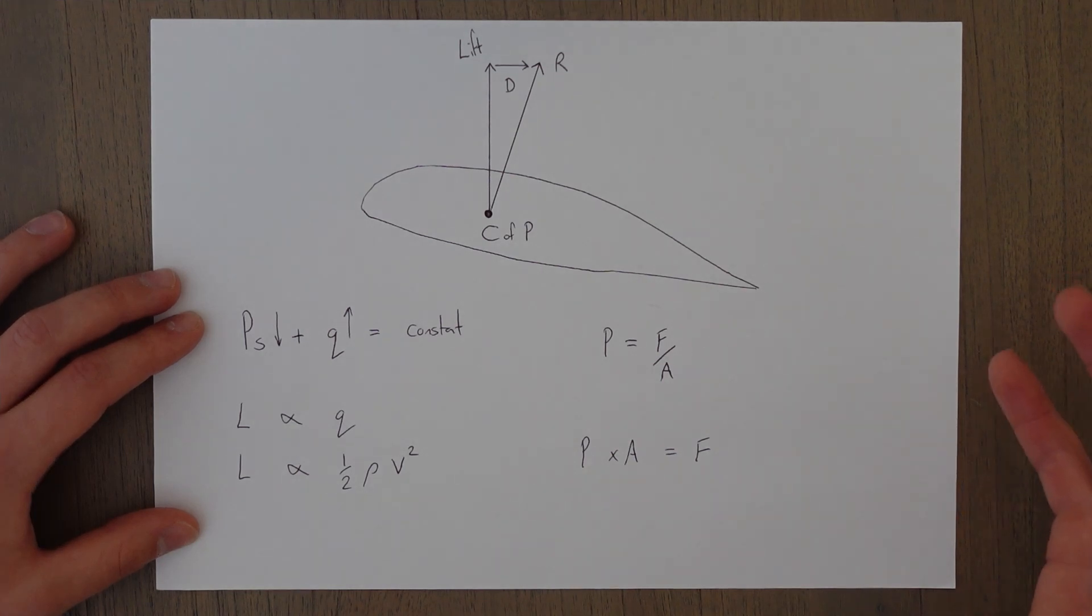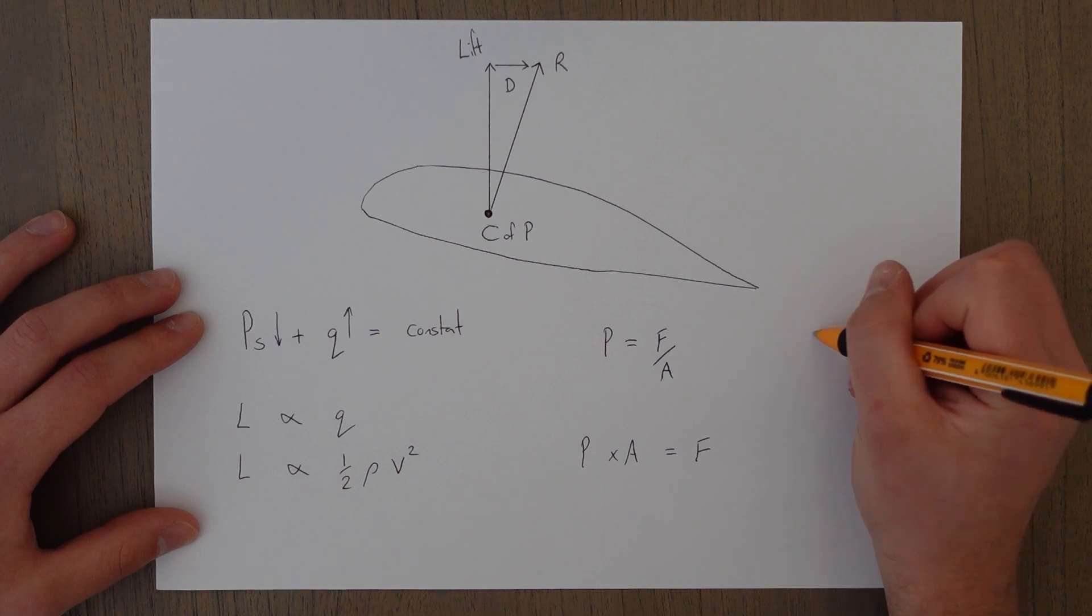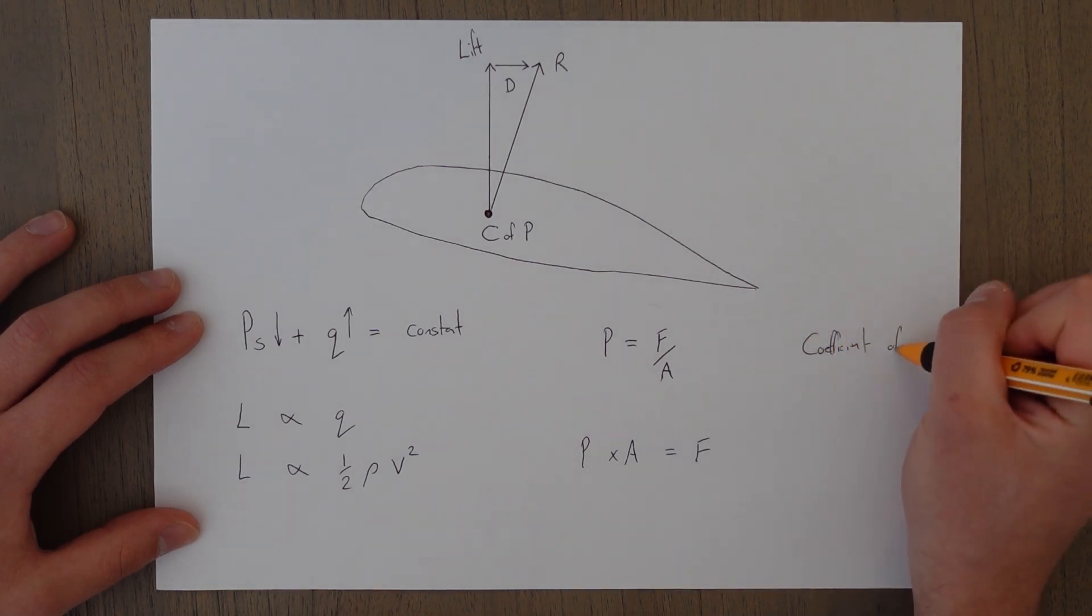The final property that influences the amount of lift that something can create is something known as the coefficient of lift or CL.